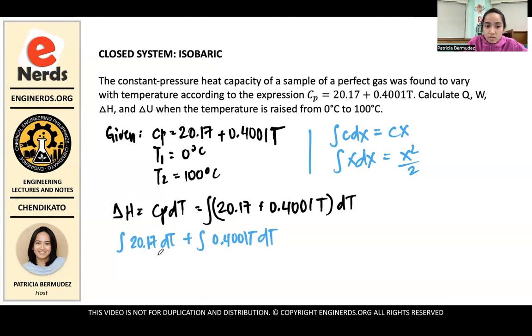So what will happen here is 20.17 is a constant. So we'll attach it to T because the variable here is T. So it will be 20.17T plus, this integral, this is a constant. So retain 0.4001. Then your T, in this case, it will be T squared over 2. So T squared over 2.